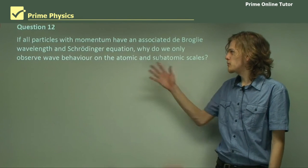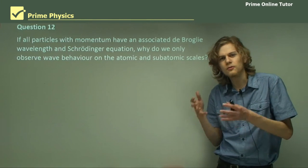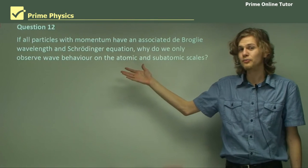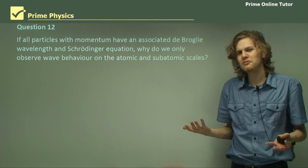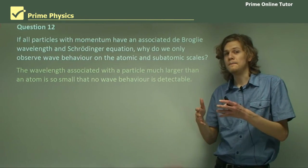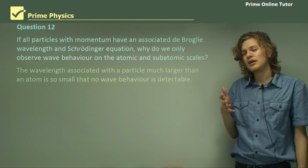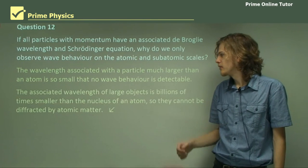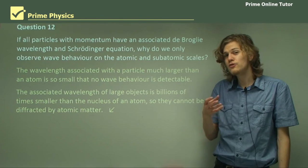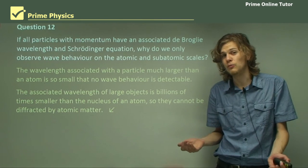Question 12: If all particles with momentum have an associated de Broglie wavelength and Schrödinger's equation, then why don't we observe wave behavior anywhere else — why do we only see it on such a small scale? The answer is because the wavelengths associated with a particle much larger than an atom are tiny. The de Broglie wavelength is far smaller; the Schrödinger equation has a far, far smaller wavelength, and so no wave behavior is really detectable at all. For all intents and purposes, they're not waves. The associated wavelengths are billions of times smaller than even the nucleus of an atom, which means they're not going to be diffracted by atomic matter.